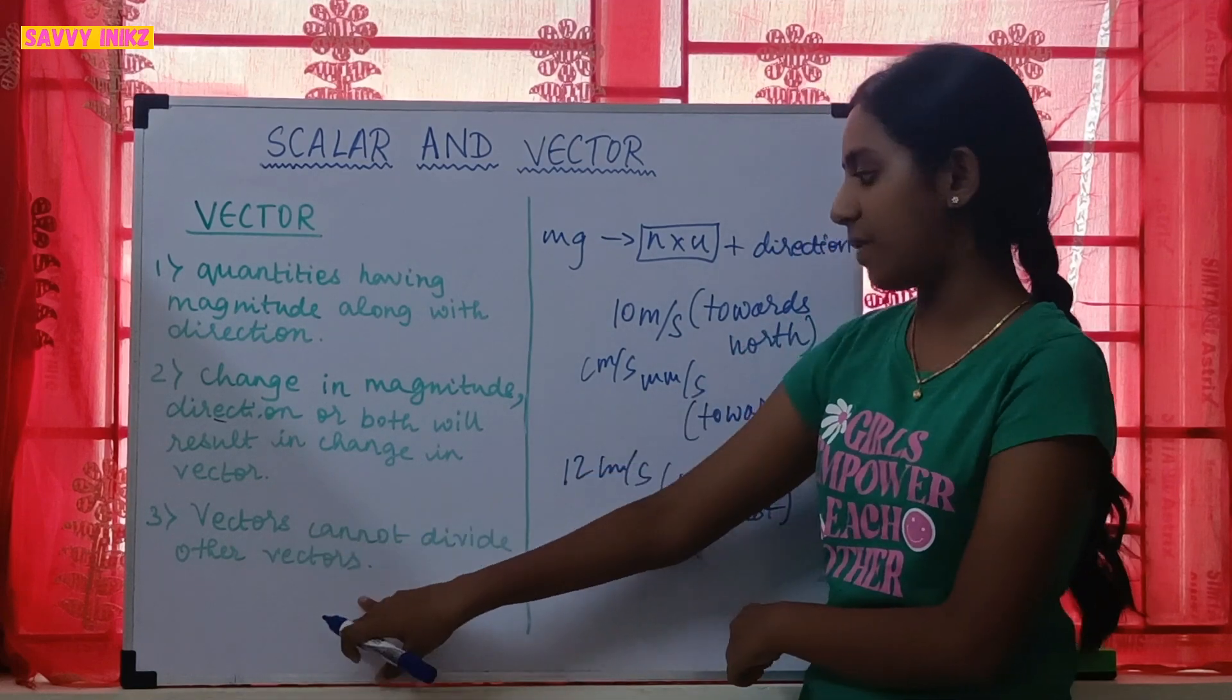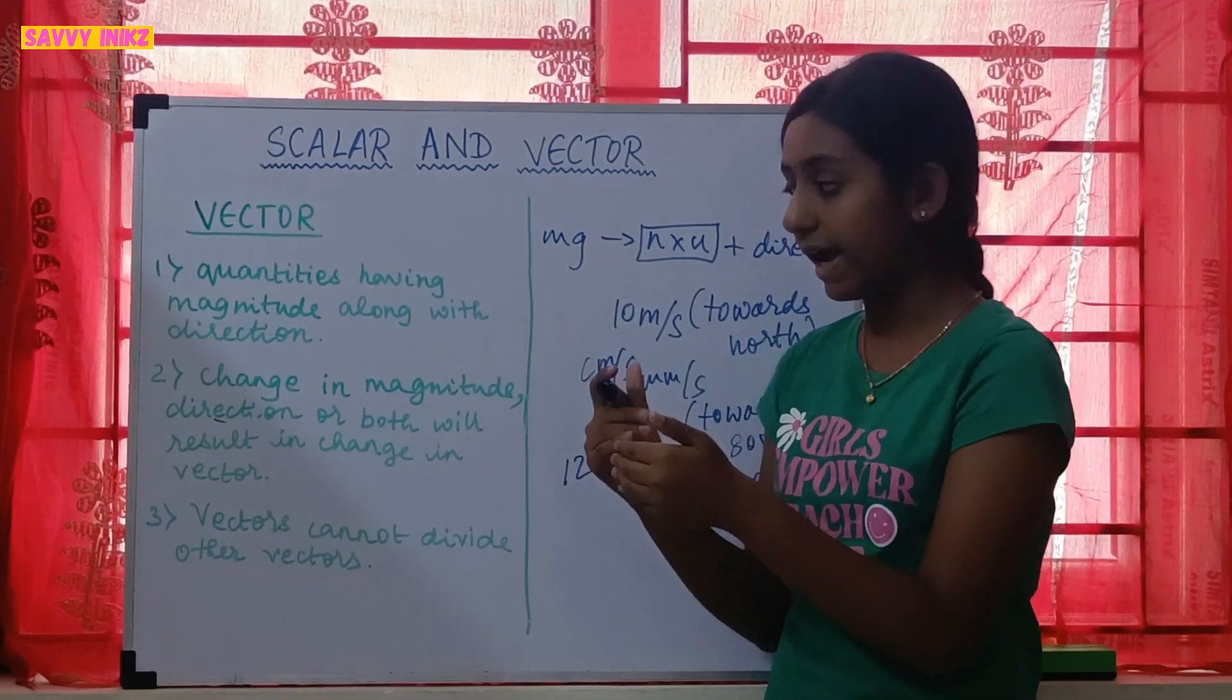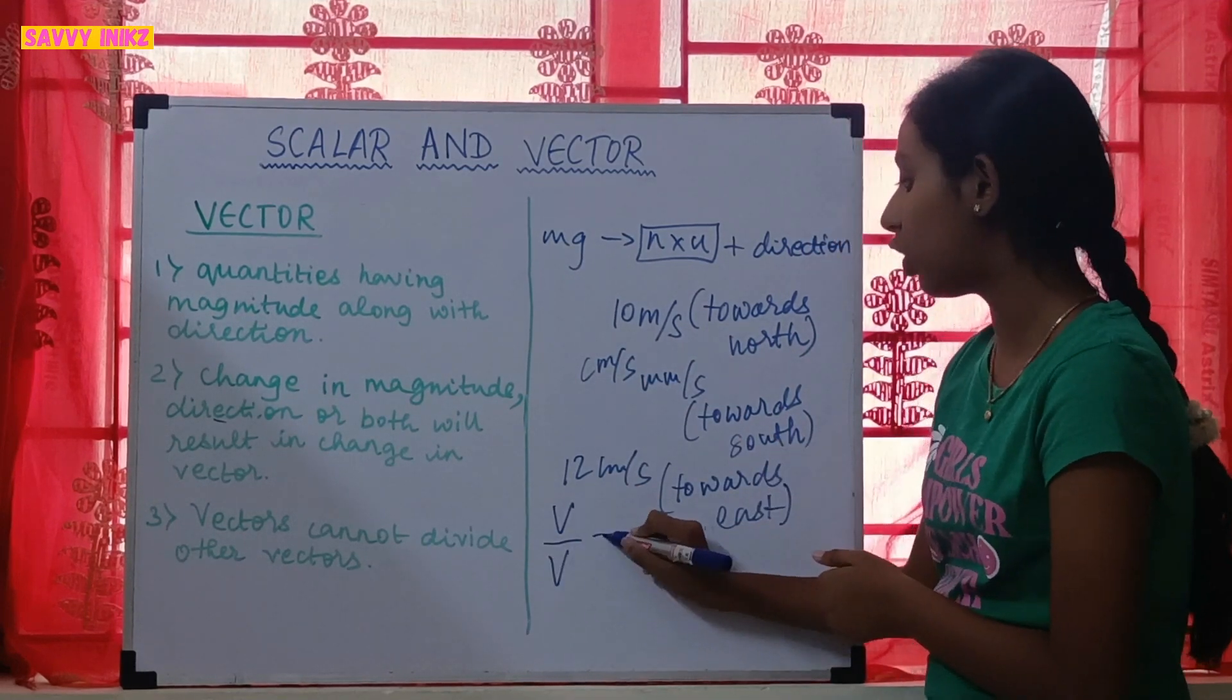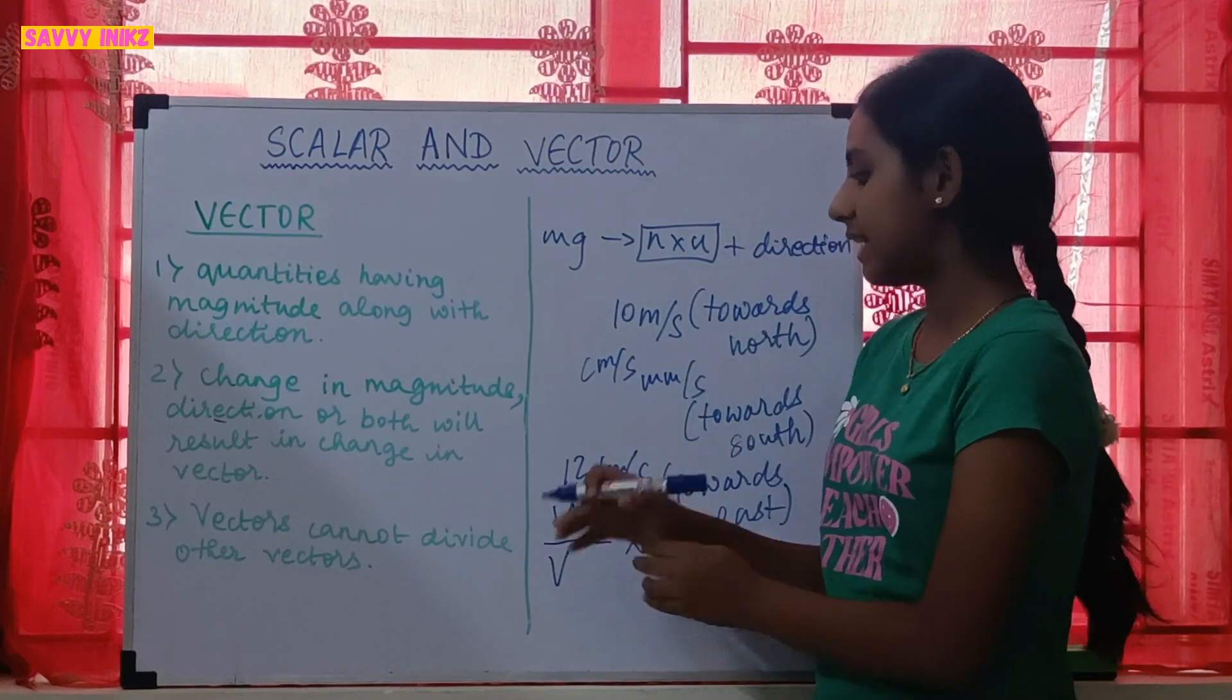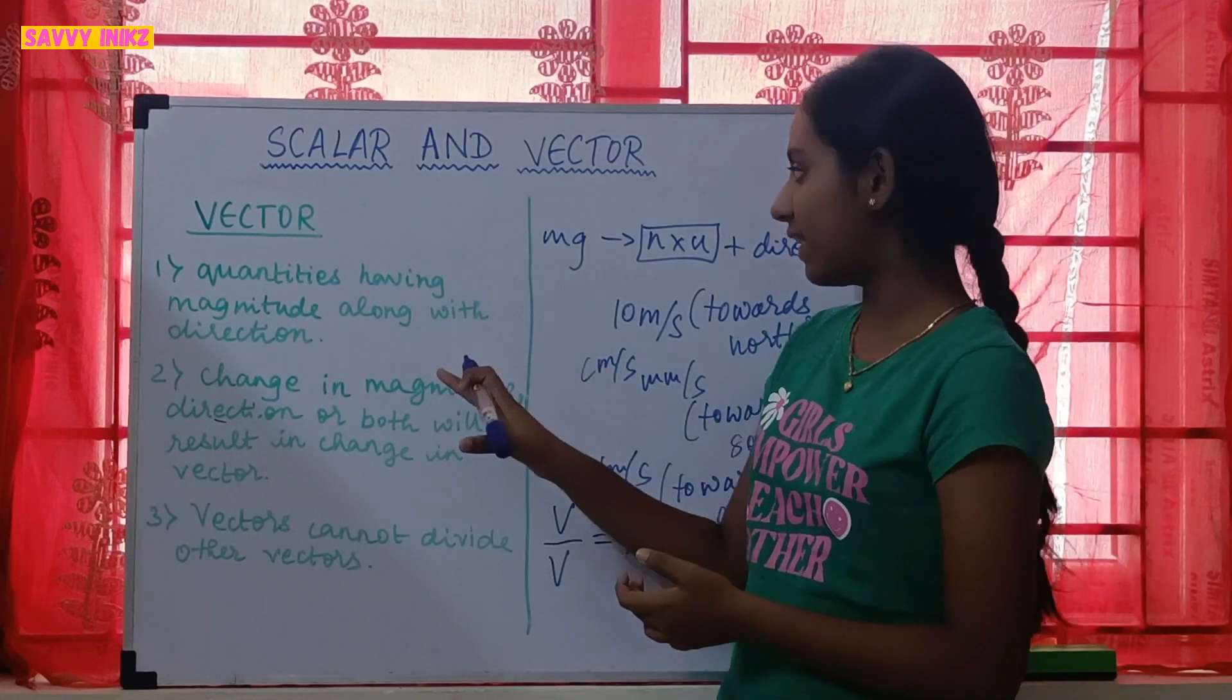So vectors cannot divide other vectors. Previously in the scalar case, we learnt that it can divide. But a vector quantity divided by another vector quantity will not give you any other physical quantity. So it's like it cannot divide. It's not possible. So this is all about vector quantities.